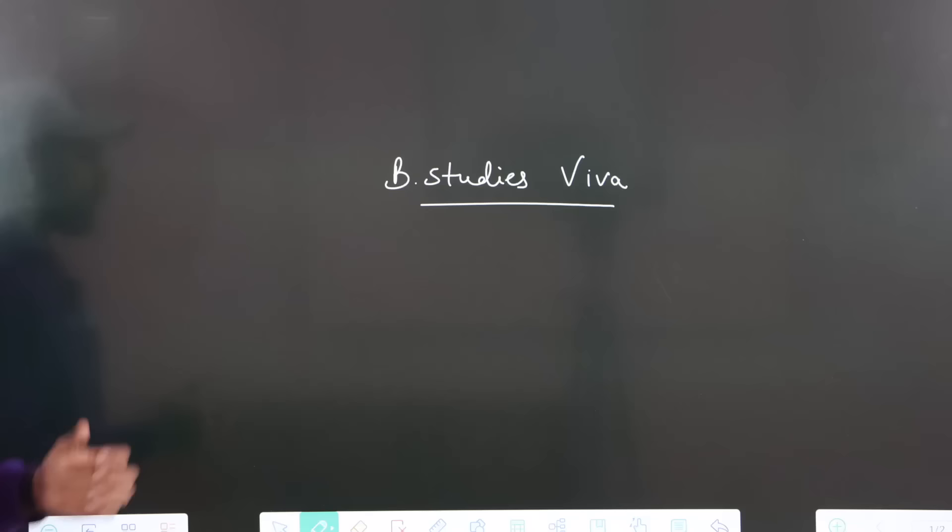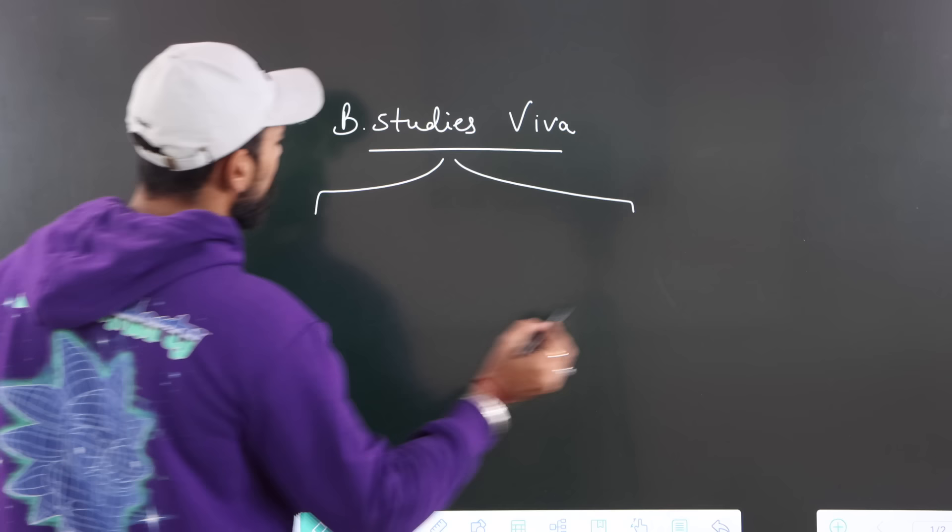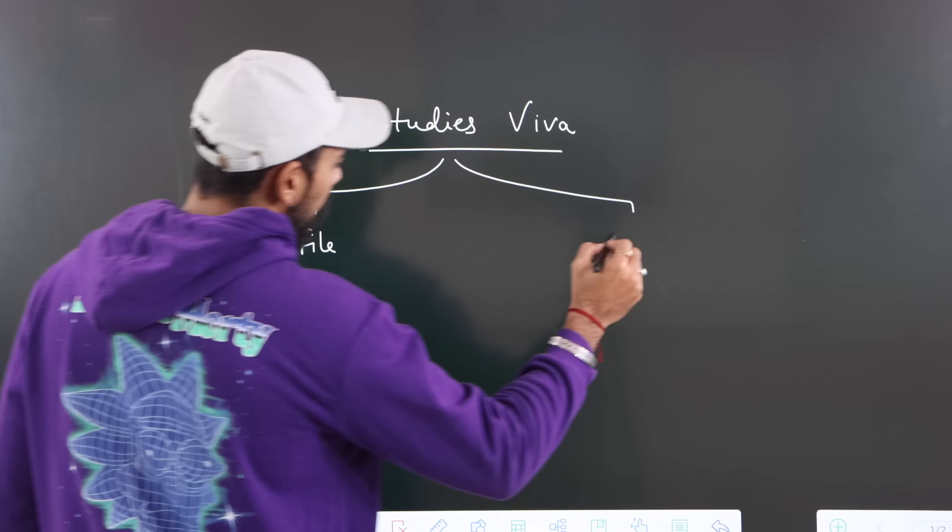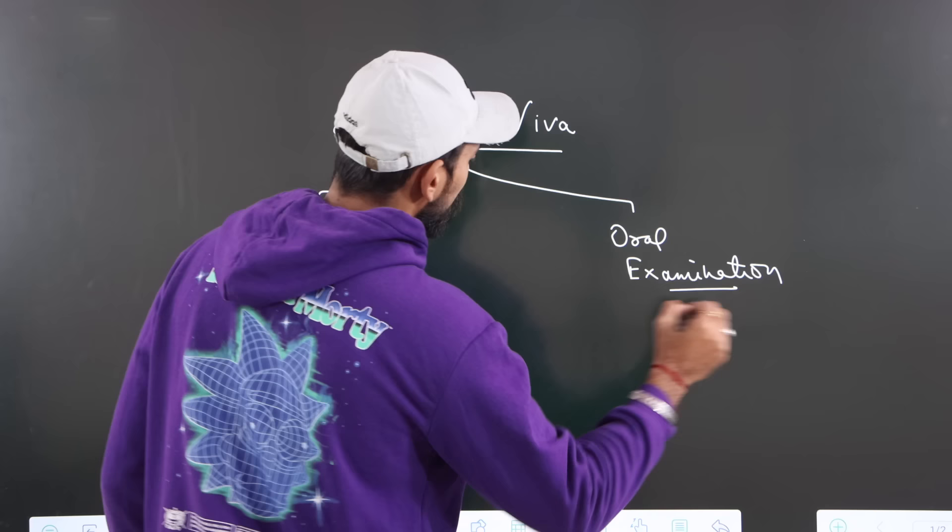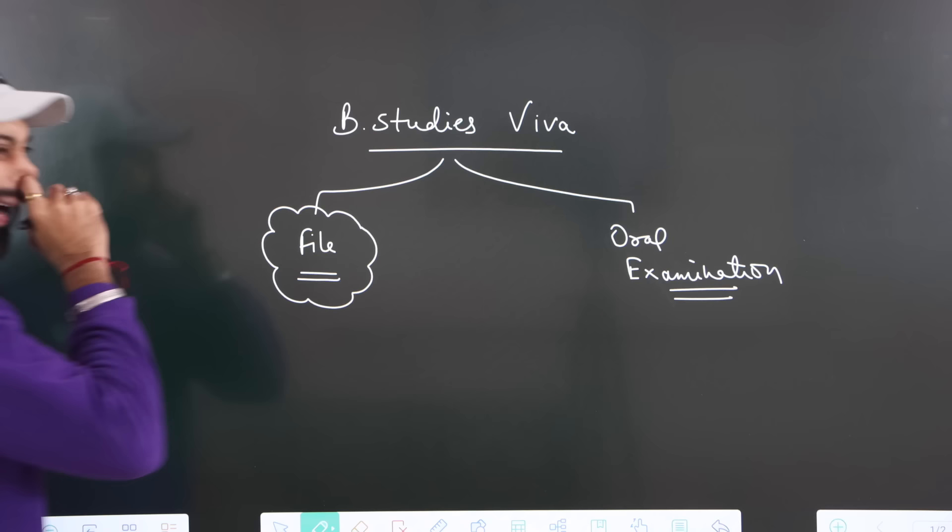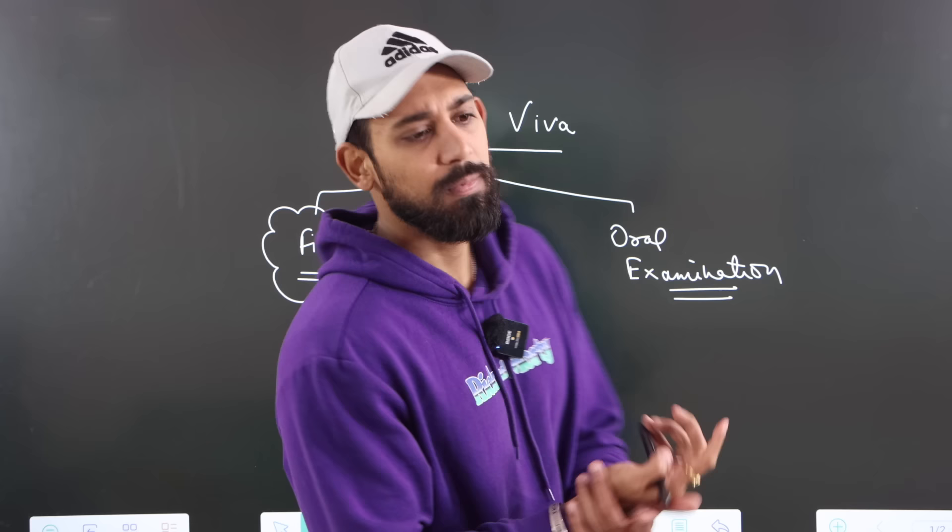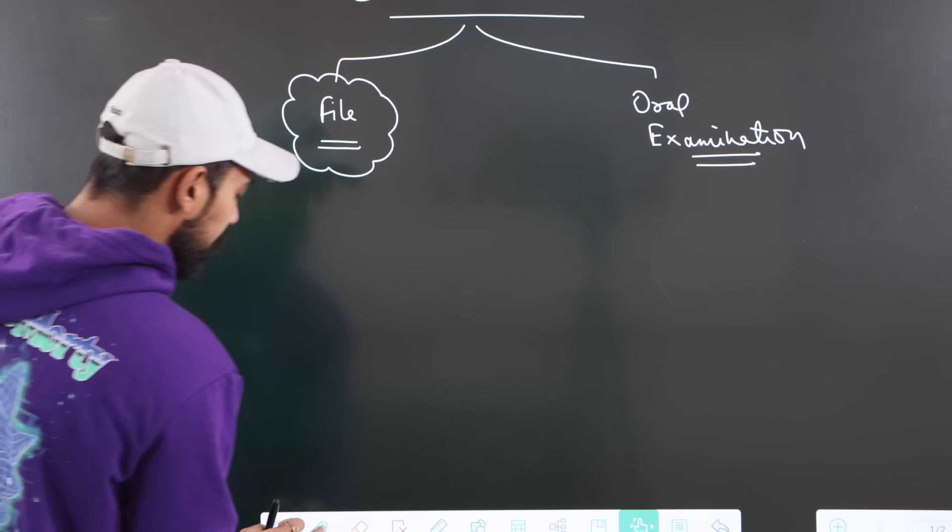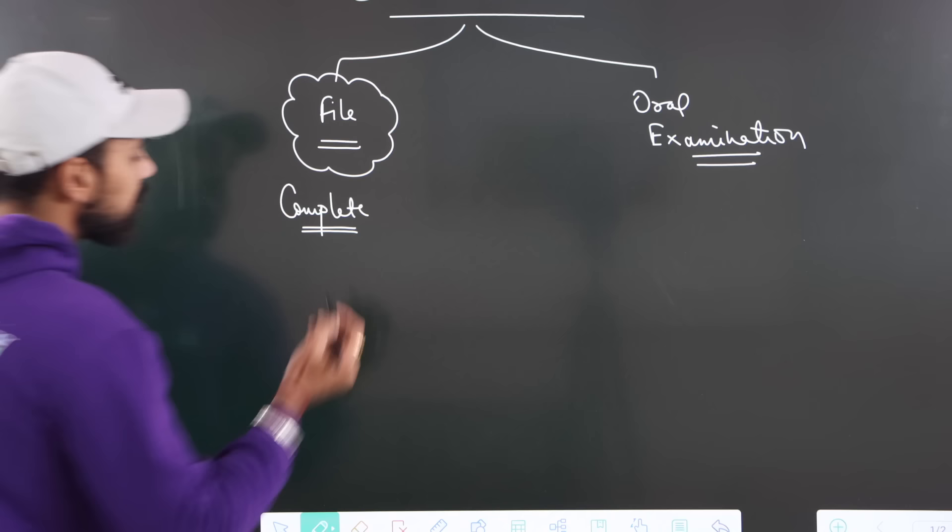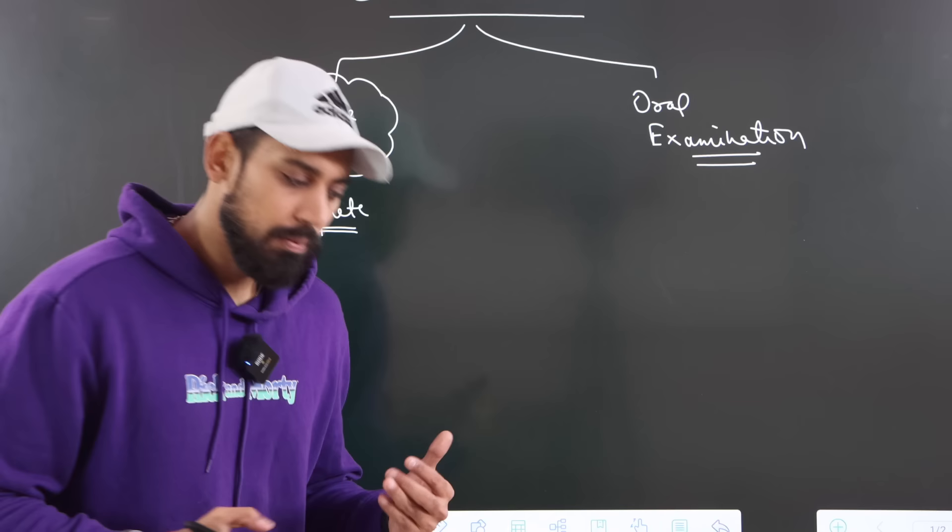So guys, business studies viva is also developed in that same way. There are two things in it. One is your file and one is your oral examination. First of all, you have to make your business studies file very good. You have taken a file on any topic - Marketing, Principles of Management, Demonetization, or something else. So you should know that your file is complete. Complete means that there is nothing missing. Proper acknowledgment, index, details should be good. The last bibliography and all the thank you notes to the teacher should be complete.